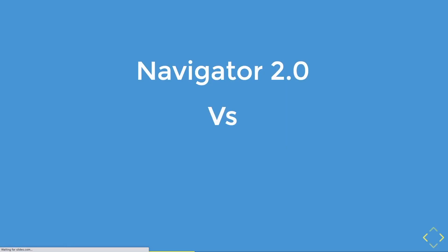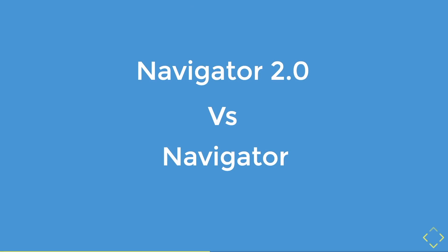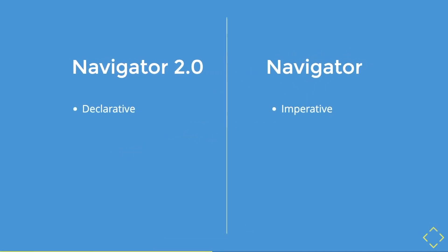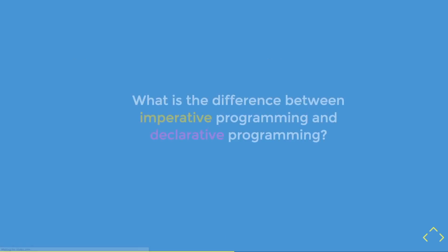So what is the difference between Navigator 2.0 and Navigator 1.0, or the OG? At a high conceptual level, the difference is that Navigator 2.0 is a more declarative way of doing navigation in your Flutter app, while the OG Navigator or Navigator 1.0 uses an imperative way. But you might be asking: what is the difference between imperative programming and declarative programming?